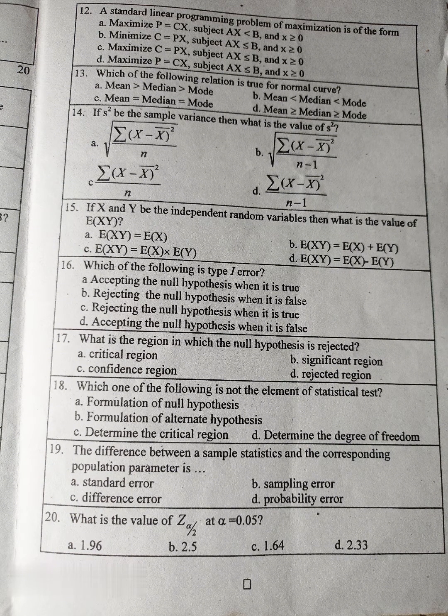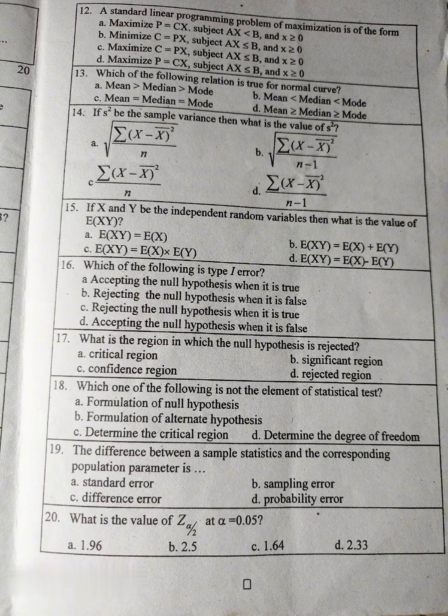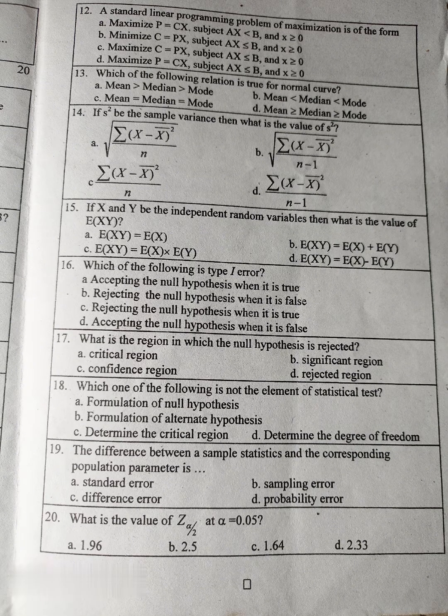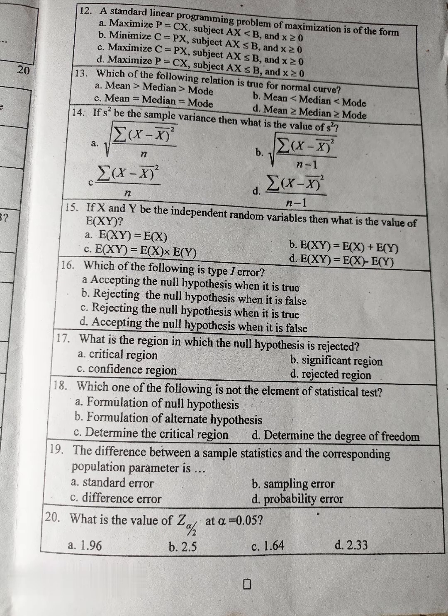A. maximize P equal to CX subject AX less than B and X equal to 0, B. minimize C equal to PX subject AX less equal to B and X greater equal to 0, C. maximize C equal to PX subject AX less equal to B and X greater equal to 0, D. maximize P equal to CX subject AX less equal to B and X greater equal to 0. Question number 13: Which of the following relation is true for normal curve? A. Mean greater than median greater than mode.